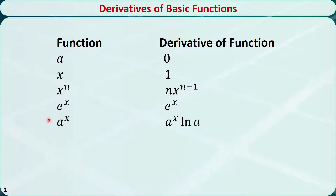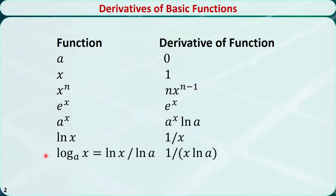The derivative of a to the power of x is a to the power of x times the natural logarithm of a. The derivative of the natural logarithm of x is 1 over x. The derivative of the logarithm of x to base a is 1 over x times the natural logarithm of a.